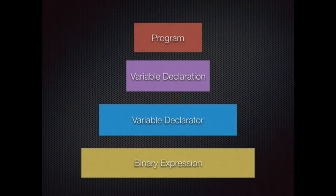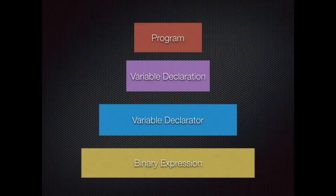One thing you'll understand as you start dealing in AST land — you'll start really getting to know all the different types of things that happen in JavaScript code and the very official names for them. So when you look at the spec, you'll say, hey, I know what a variable declarator is — that's a real thing. And you can relate that to actual code because you've lived in AST land long enough. It's a strange land, but it's a good land.